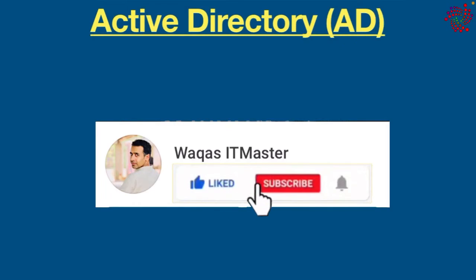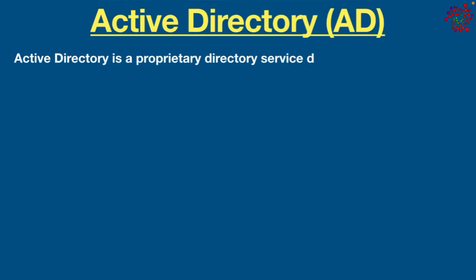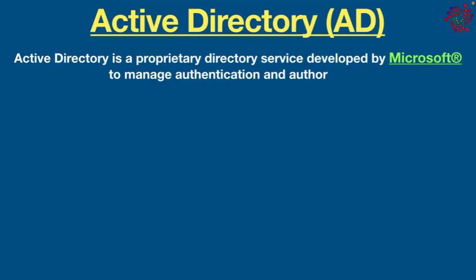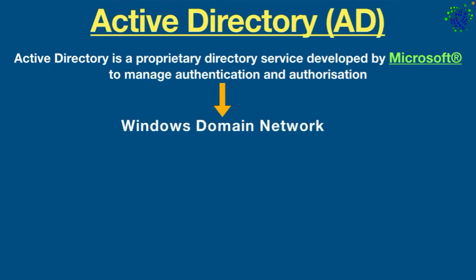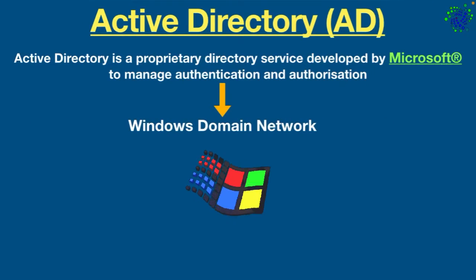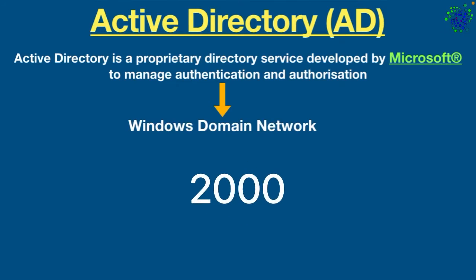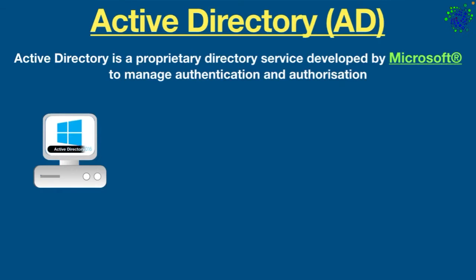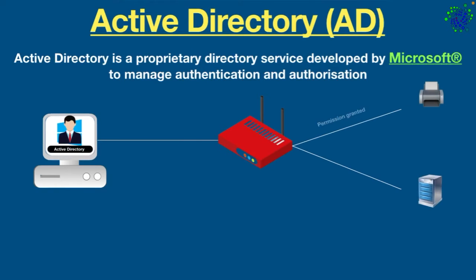Hello everyone and welcome back. Today in this video we are going to be talking about Active Directory — what is it and what is it used for? Active Directory is a proprietary directory service developed by Microsoft to manage authentication and authorization of users and devices on a Windows domain network. It was first released in 2000 and installs on Windows Server, enabling administrators to manage permissions and access to network resources.